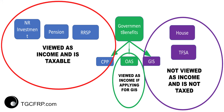So to begin, I'm going to ask you to picture three boxes in a row, a horizontal row. The first box is labeled non-registered investment. The second one, a pension — say it from the government or from a private company. The third one is your Registered Retirement Savings Program, RRSP. Next to that, another box called government. And below that box, three little boxes called CPP, OAS, and GIS.